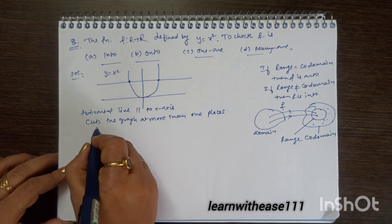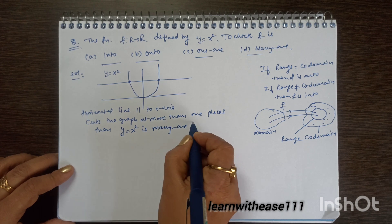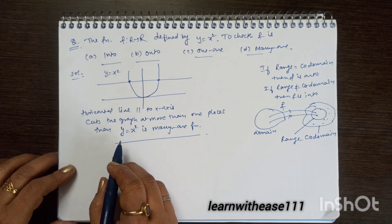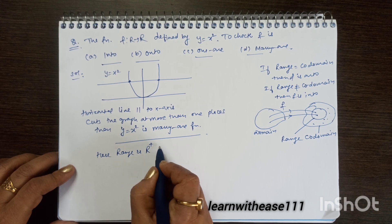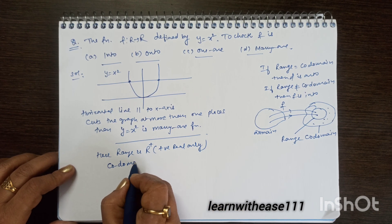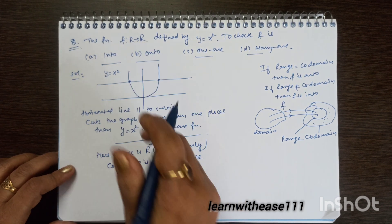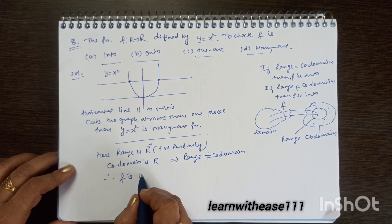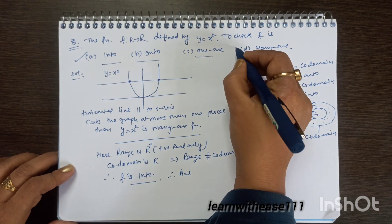The function y = x² is into and many-one. The codomain is the whole set of real numbers, but the range we get contains only positive y values. Since range is only positive reals, it does not match the codomain, so the function is into. Hence parts A and D are correct — the function is into and many-one.